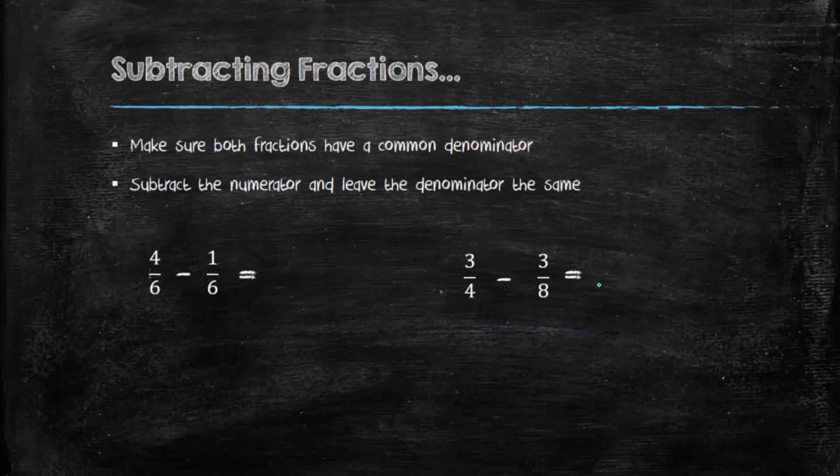Okay, so there are two things that we need to consider when we're subtracting or adding fractions. If you've seen my adding fractions video, this will be a review. The first thing that we need to consider is we need to make sure that both fractions have a common denominator. If you recall, we call the top number in a fraction a numerator, and the bottom number we call a denominator.